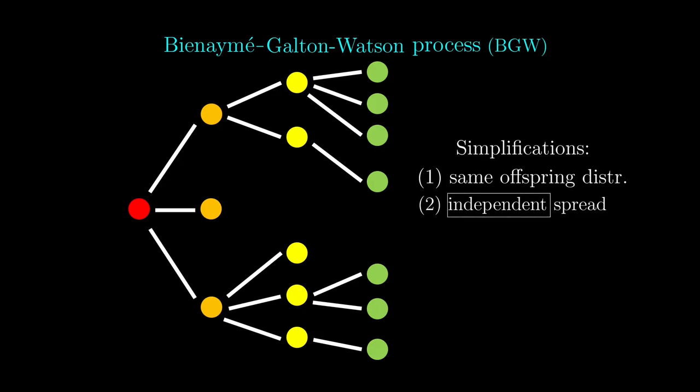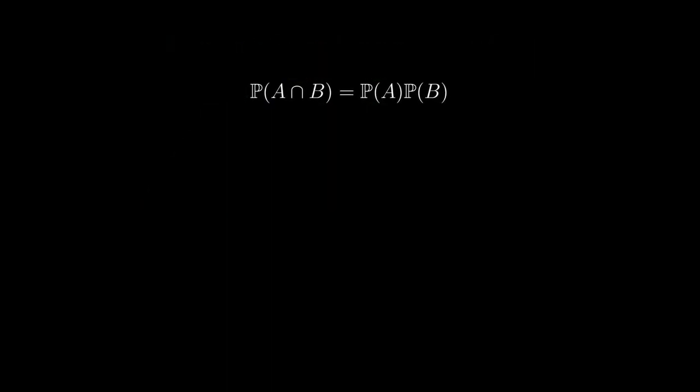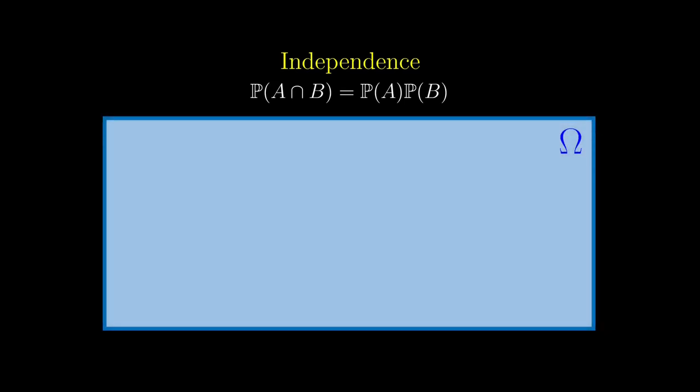Independence has a specific meaning in probability theory summarized in this formula. As a very quick detour, let's see why we have this formula for independence. To see why this formula has anything to do with independence of two events,